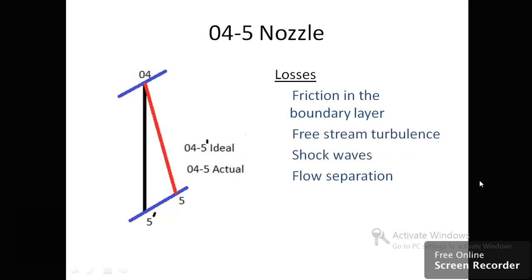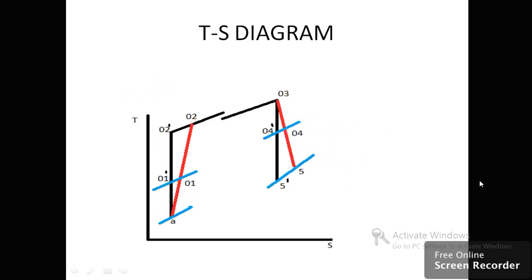The final component is the nozzle. For the ideal case entropy remains constant, i.e., it is isentropic, but due to friction in the boundary layer, free-stream turbulence, shocks in the nozzle, and flow separation, entropy increases and the actual process becomes non-isentropic. This slide shows the combined actual and ideal T-S diagram of a turbojet engine. Dashed values — 01′, 02′, 04′, 5′ — represent ideal values, while 01, 02, 03, 04, 5 represent actual values.